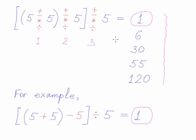For example, how to obtain one? It's very easy. Five plus five equals ten, minus five equals five, divided by five equals one.